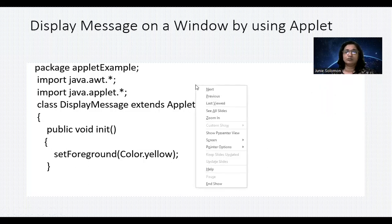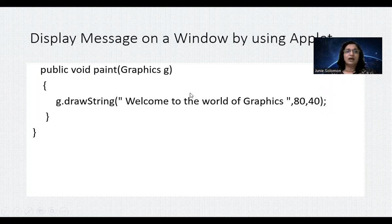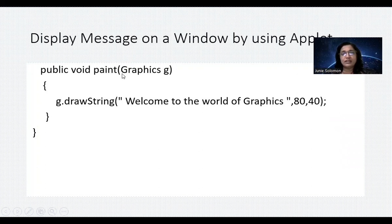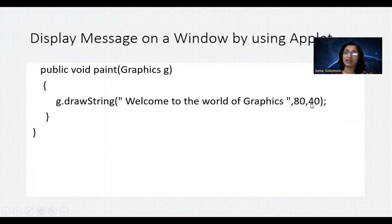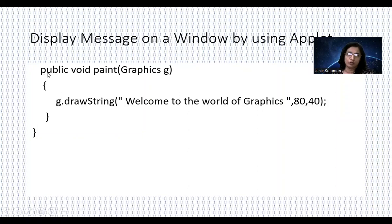Next, write public void paint with Graphics as a parameter. Without Graphics, you cannot draw a string. Use g.drawString with the message you want to display — for example, 'Welcome to the world of graphics' — and specify the x and y coordinates in pixels, such as 80 and 40. Then close the paint method and the class.